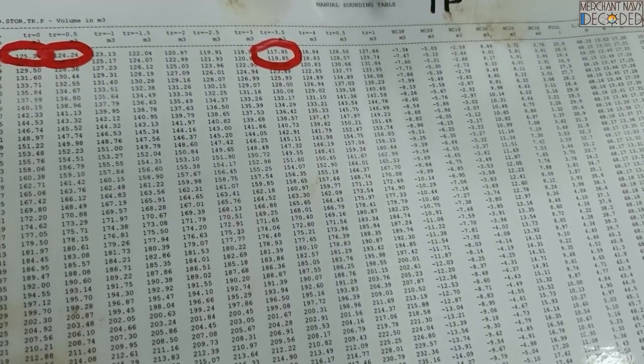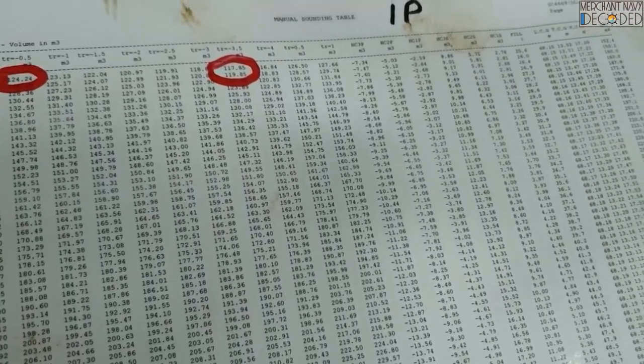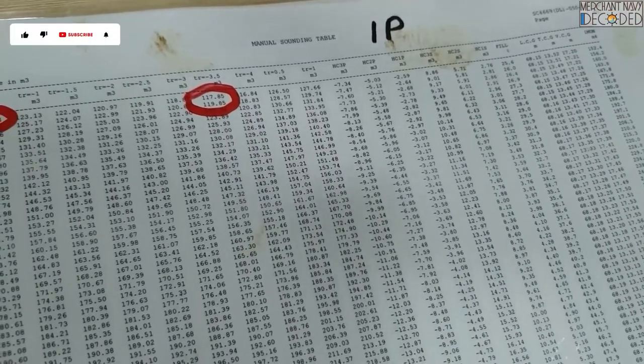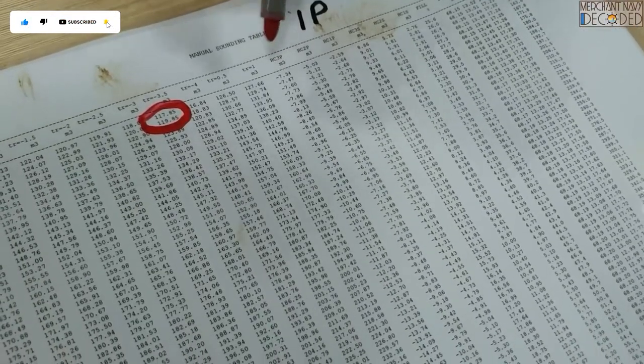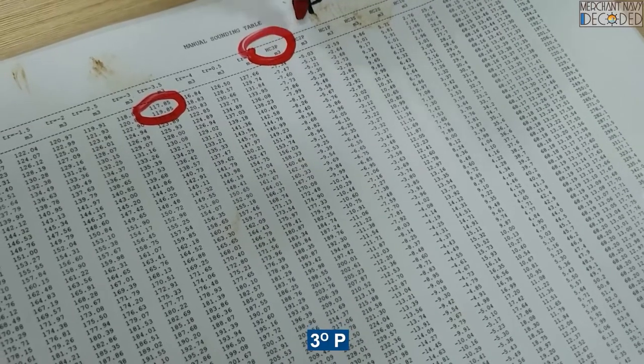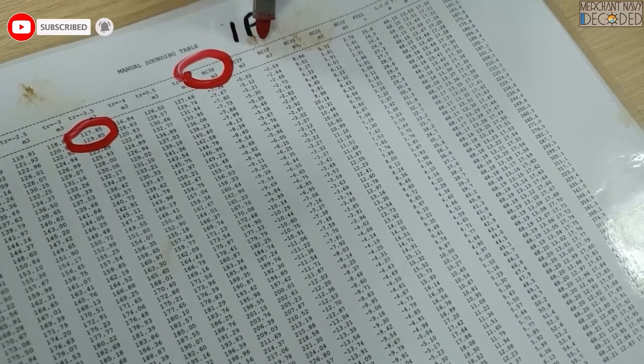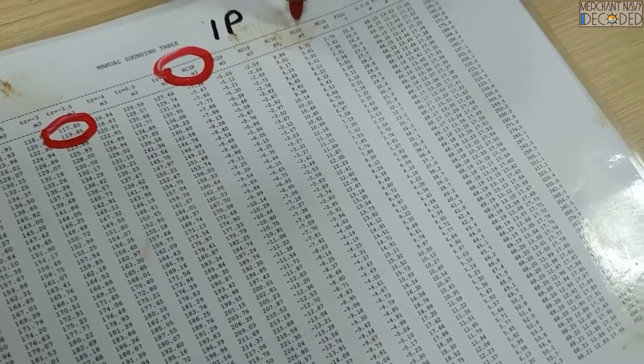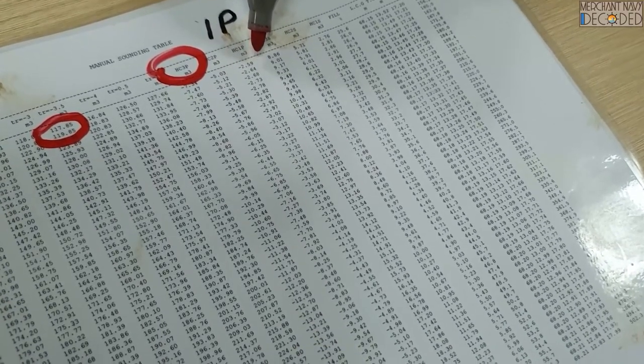This is what you need to know. Accordingly, sometimes corrections are given on the basis of list and on the starboard side or the port side. Now see, this is as per the list. This is cargo tank listed port side 3 degrees, cargo tank listed port side 2 degrees, cargo tank listed port side 1 degree, cargo tank listed starboard side 3 degrees, cargo tank listed starboard side 2 degrees. And over here this volume is minus 5.03, 2.59.